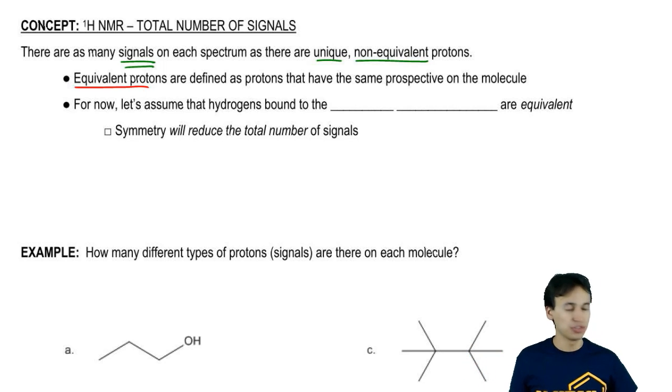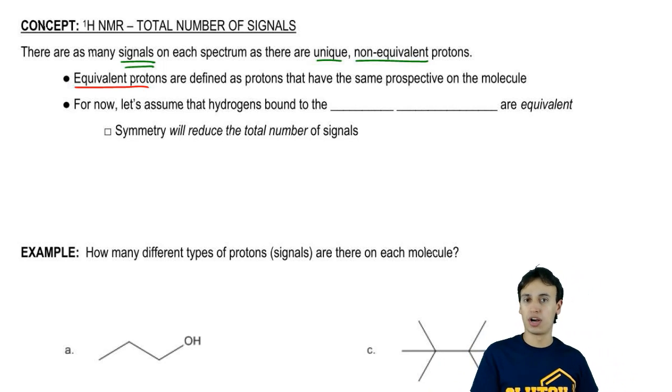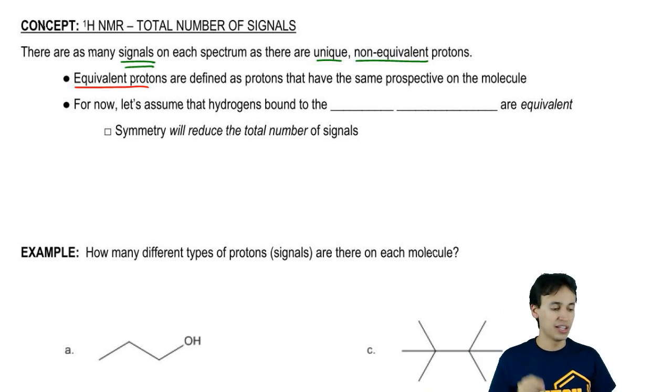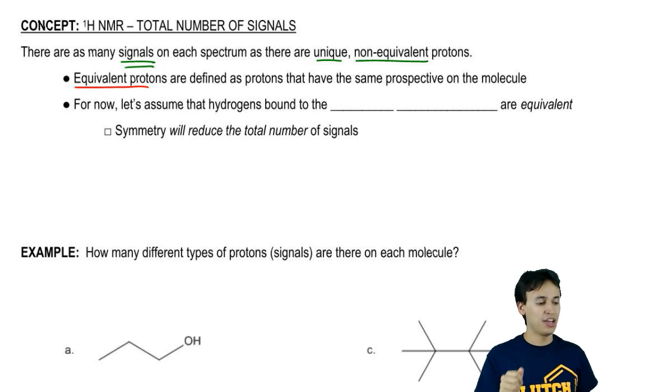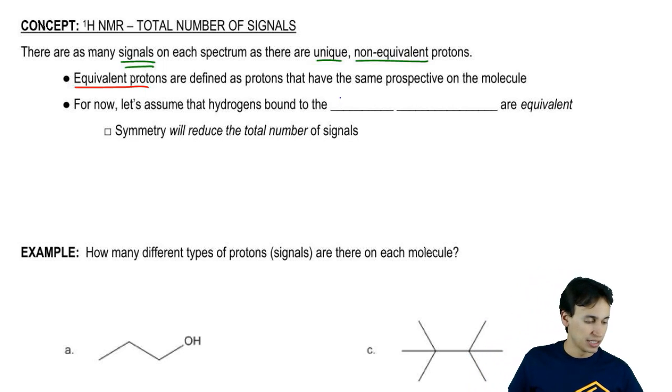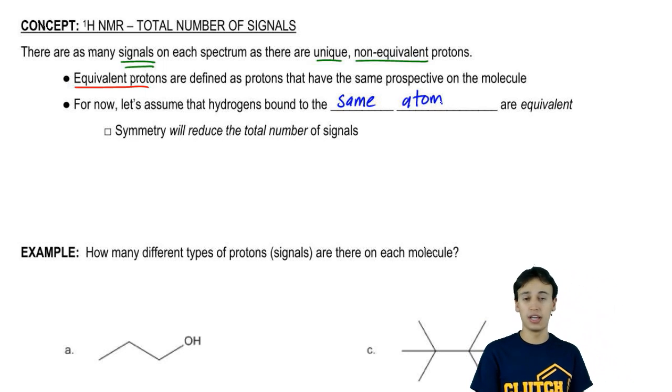For right now, how are we going to be able to determine if something is equivalent or non-equivalent? We're just going to go with a really easy rule which is that let's go ahead and assume that hydrogens bound to the same atom are equivalent. Like I just said, the three hydrogens on a methyl group or on a carbon would be equivalent. That would apply to other atoms as well, not just carbon.